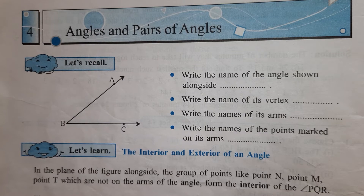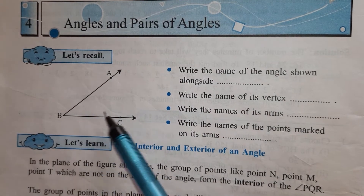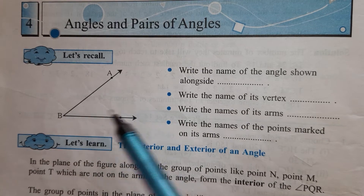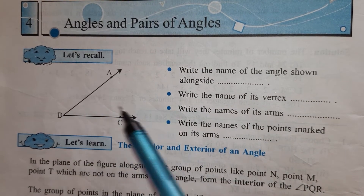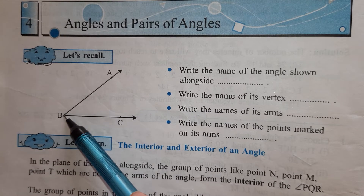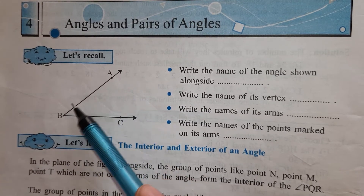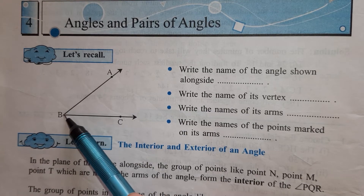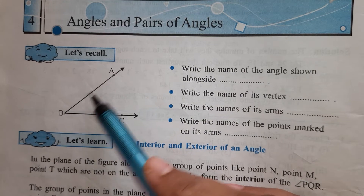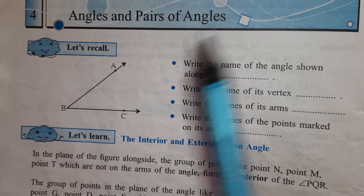So quickly we will take a revision before starting the new topic. When 2 rays intersect at a common point, then such a figure is called an angle. This common point is called the vertex of the angle, and these 2 rays are called the arms of the angle.